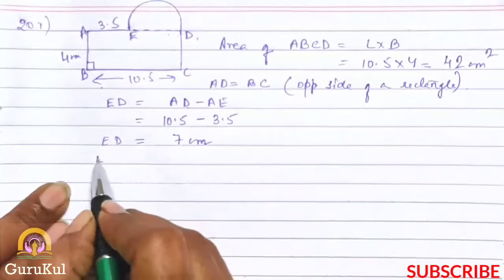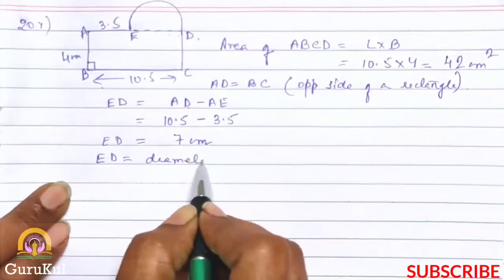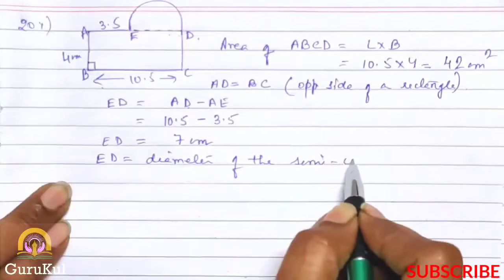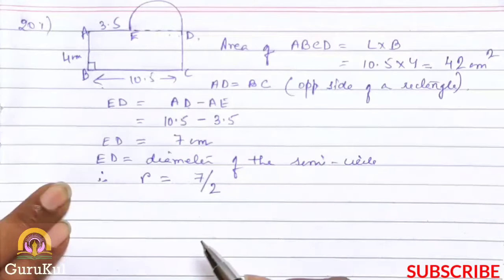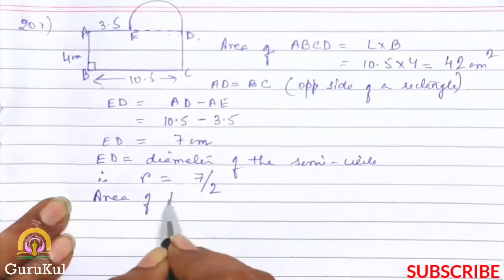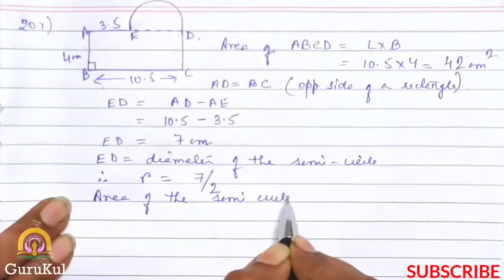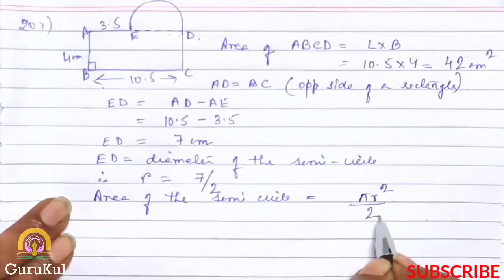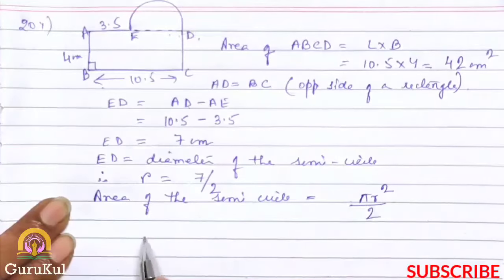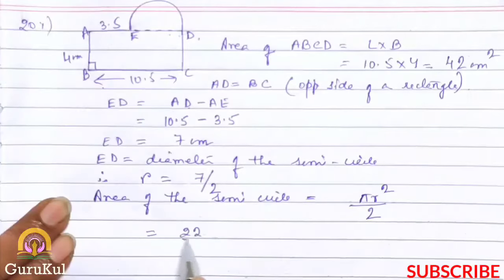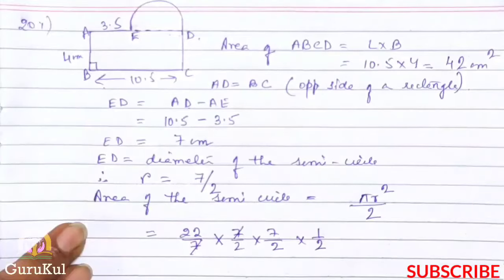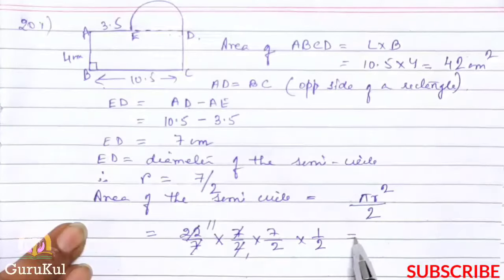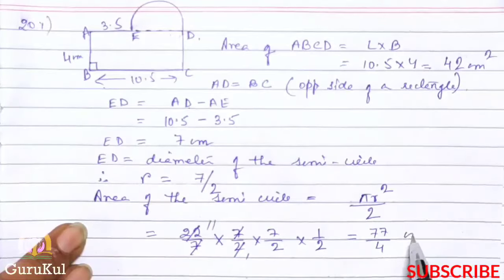ED is equal to the diameter of the semicircle. Therefore radius is equal to 7 by 2. Hence area of the semicircle is equal to pi r square by 2, because it is a semicircle. Pi is 22 by 7 into 7 by 2 into 7 by 2 into 1 by 2. 7 and 7 got cancelled, giving us 77 by 4 cm square.